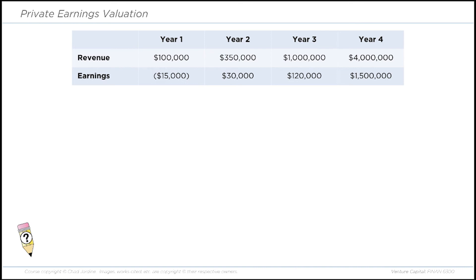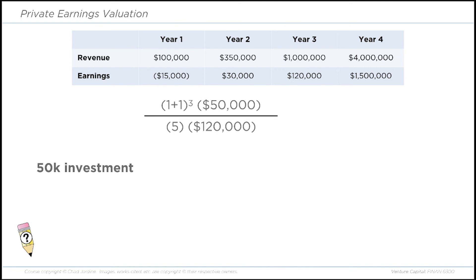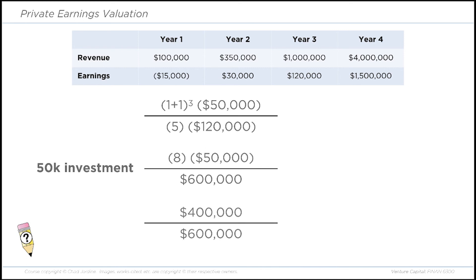Let's look at an example — a private company valued on earnings. You can see the anticipated revenue and earnings picture over the next four years. Assume a $50,000 investment with an exit in three years. Plug in the info: (1 + 1) to the power of 3, multiplied by $50,000 in the numerator. For the denominator, use the private earnings multiple of 5 multiplied by anticipated earnings in year three, which is $120,000. That gives us 8 × $50,000 = $400,000 on top, and $600,000 on the bottom — a hurdle rate of 66.67%. The investor would need to own two-thirds of this company to achieve their required rate of return.